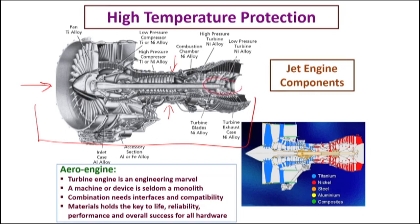This is happening at the high temperature zone — basically the combustion zone. The compressor part blades are made up of titanium alloys because the temperature expected is less than 500 degrees centigrade, somewhere around 350 to 400 degrees centigrade, whereas the combustion zone we expect easily temperatures as high as 1050 degrees centigrade.